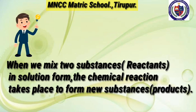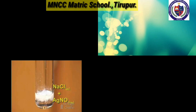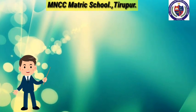When we mix two substances (reactants) in solution form (liquid form), a chemical reaction takes place to form new substances (products). For example, silver nitrate solution reacts with sodium chloride solution to form a white precipitate of silver chloride and sodium nitrate solution. From this reaction we infer that some chemical reactions proceed only in solution form, not in solid form.